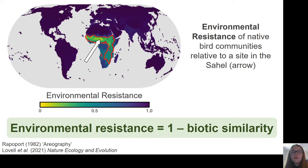Environmental resistance of one site relative to another site would be one minus the biotic similarity between the two sites. So a site sharing more species with the focal site will have a lower environmental resistance, and a site sharing fewer species will have a higher environmental resistance. When environmental resistance is mapped, it reveals patterns that reflect the environmental gradients and geographic barriers that are limiting the spread of species in an area.